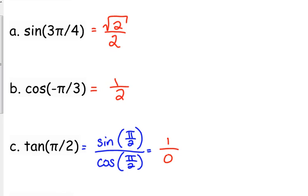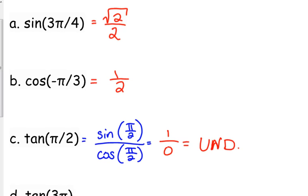No. 0 on the bottom, no way. So that is undefined. You can put UND. I'm fine with that. That is an undefined value. Tangent of pi over 2 does not exist.